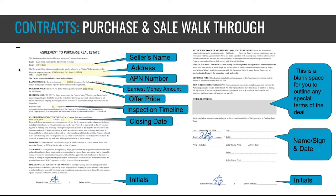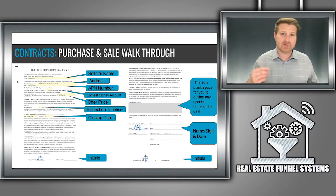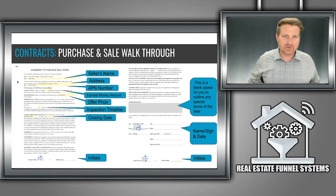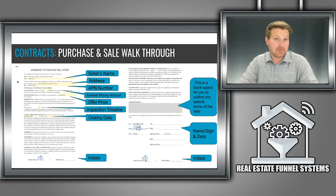It's a two-page purchase and sale agreement. Very simple to fill out. You can see seller's name, address, the APN number, the earnest money amount, the offer price, inspection timeline, closing date, initials. And then on the second page, the other provisions. This is a blank spot for you to write in any terms or special conditions. I don't use this very often. Most of the time it's just blank. But from time to time we'll use it. An example might be the barbecue to stay with the house or the car to stay with the house, something that's just kind of oddball but you need to write it into the contract.